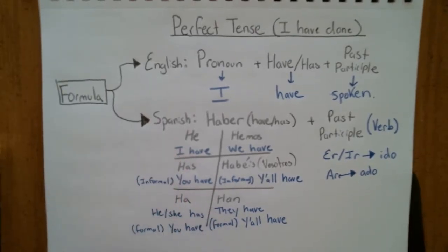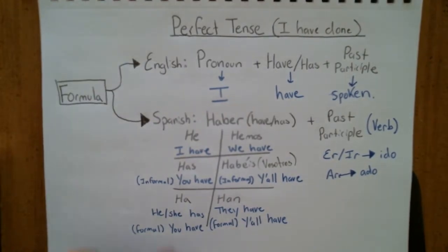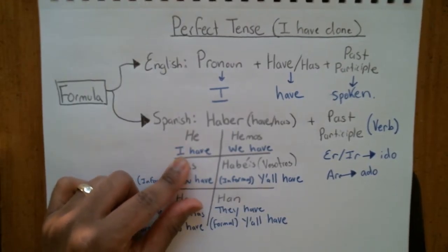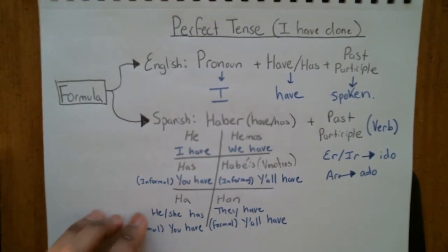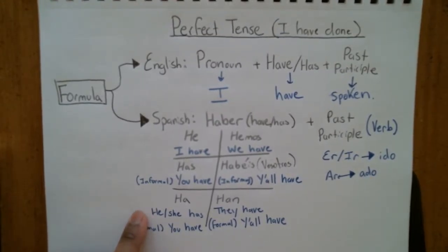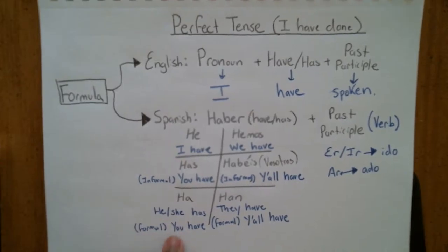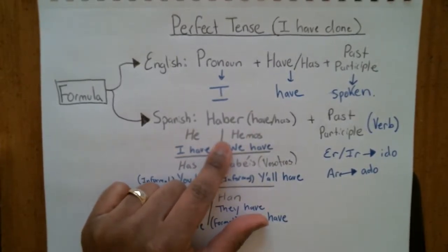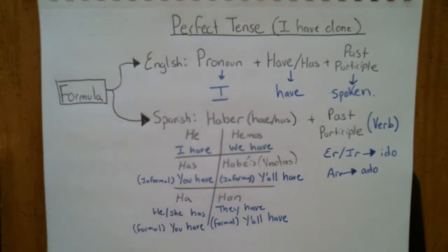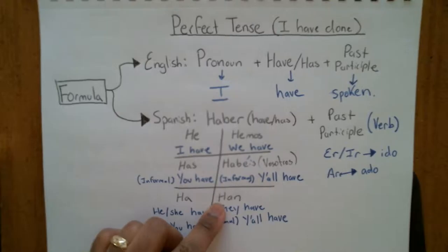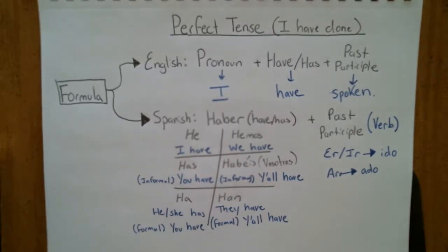We conjugate haber in the present tense to form the perfect tense. Yo: he — I have. Tú: has — you have, informal. Él/ella/usted: ha — he or she has, or you have, formal. Nosotros: hemos — we have. Vosotros: habéis — y'all have. Ellos/ellas/ustedes: han — they have, or y'all have formal. Write this down and commit it to memory — it is the key to understanding the perfect tense.